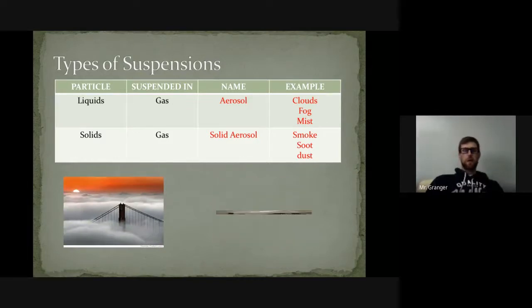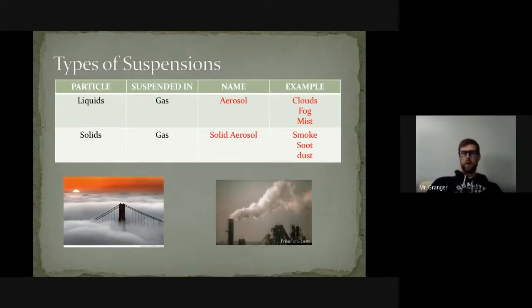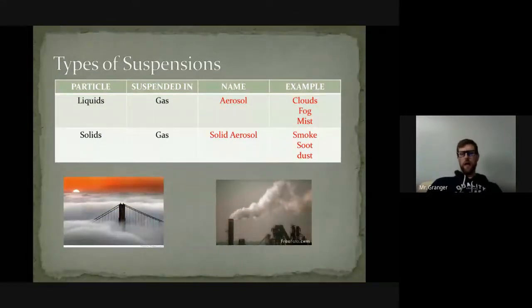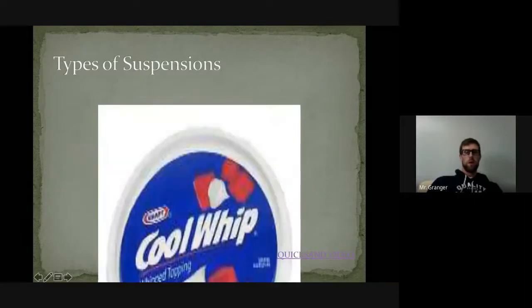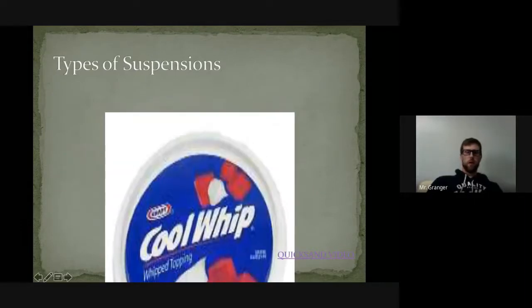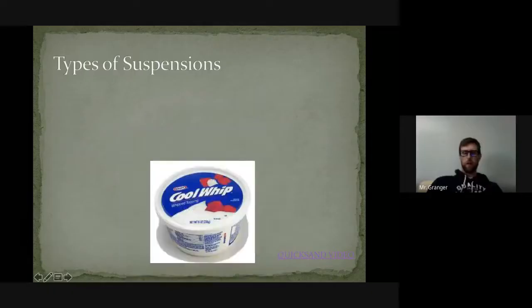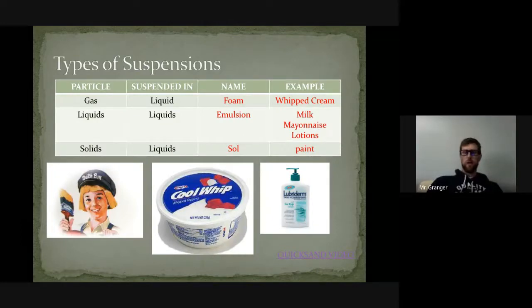There are different types of suspensions. We can look at liquid particles that are suspended in gases, like water vapor, fog, clouds or mist. Solids and gases can also create an aerosol called a solid aerosol, like smoke. Dust is also solid pieces that float around through the air or through gas.